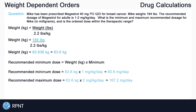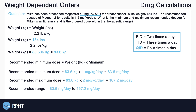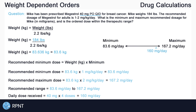We now know that the recommended range for our patient is between 83.6 and 167.2 milligrams per day. To check if the ordered dose is within this therapeutic range, we look back at the original order: 40 milligrams by mouth QID, or 4 times a day. It's important to use the entire day's dose, so 40 mg × 4 = 160 milligrams per day. 160 mg is within the range of 83.6 to 167.2, so the dose is within the therapeutic range.